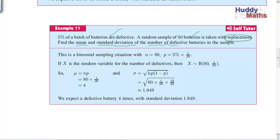Find the mean and standard deviation of the number of defective batteries in the sample. So what we're looking at is the number of defective. So this is binomial, because you either got defective or not, and there are 80 trials, and the probability of defective is 5% or 1 in 20, and non-defective is 19 in 20. So it is binomial. Two outcomes, either defective or not defective, and is P constant? Well, yes.